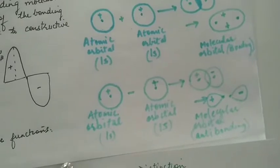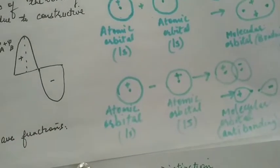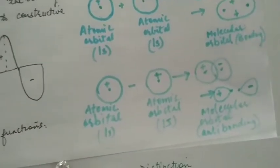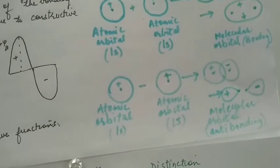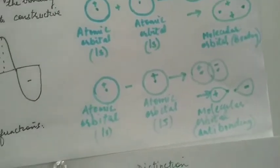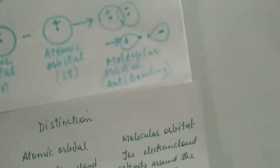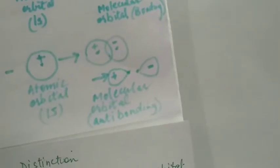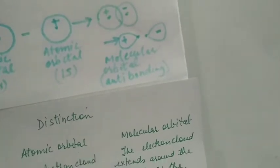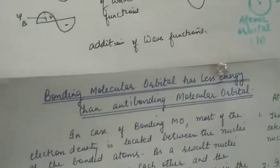In the other case, atomic orbitals have opposite signs, or one is being subtracted from the other. As a result, when the molecular orbital is formed, the electrons are away from the nuclei — there are no electrons present between the nuclei. This kind of molecular orbital is called anti-bonding molecular orbital.